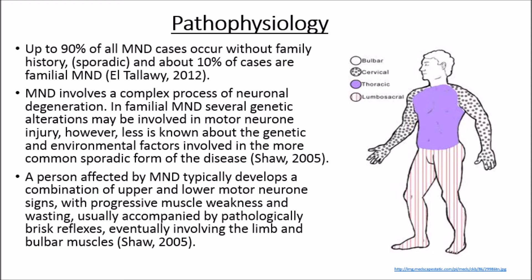A person affected by MND typically develops a combination of upper and lower motor neuron signs, with progressive muscle weakness and wasting usually accompanied by pathologically brisk reflexes, eventually involving the limb and bulbar muscles. There are varying types of MND and different progressive stages. The picture on the right shows the different sections of the body affected, including the bulbar, cervical, thoracic and lumbar regions.